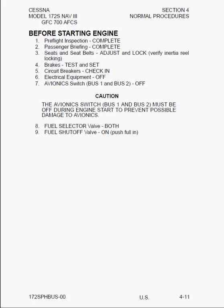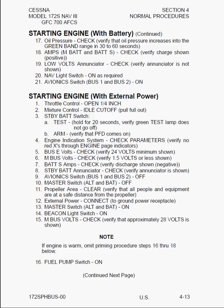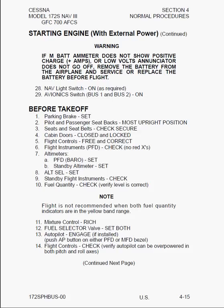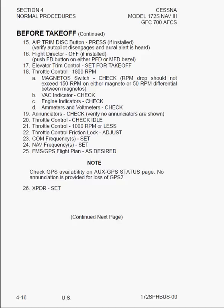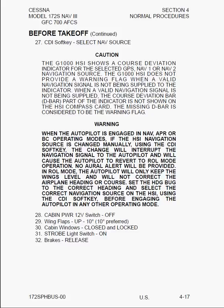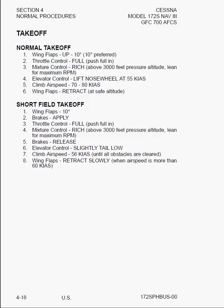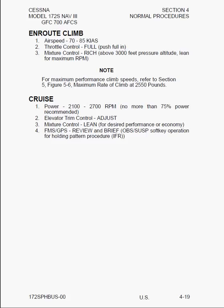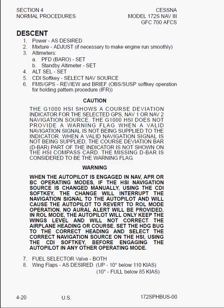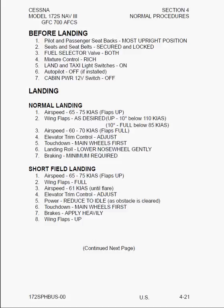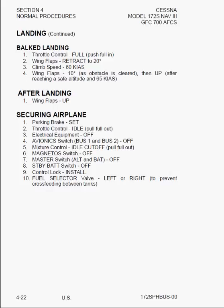Here we have starting the engine, starting the engine with the battery, and with external power. Here we have before takeoff checks, where we run up the engine, make sure we have the weather and the current pressure setting. For takeoff, we can do a normal takeoff or a short field takeoff where we might have a runway requiring maximum takeoff performance. We also cover en route climb, cruise, descent, before landing checklists, normal landing, short field landing, balked landing, after landing checklists, and then securing the airplane — shutting everything down, tying the airplane to the tie-downs, putting chocks in the wheel, and shutting the engine off.